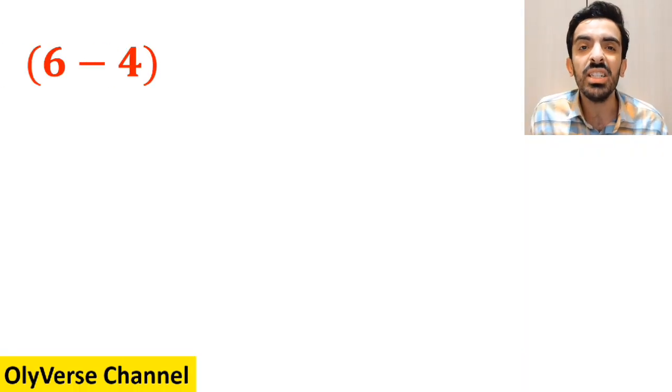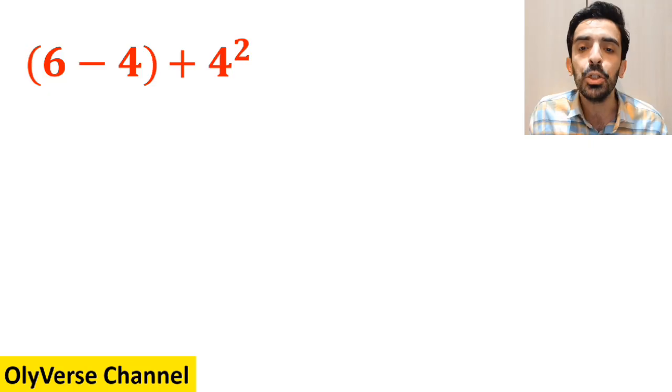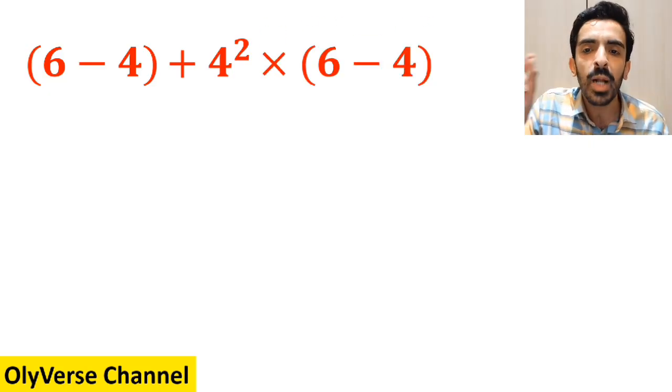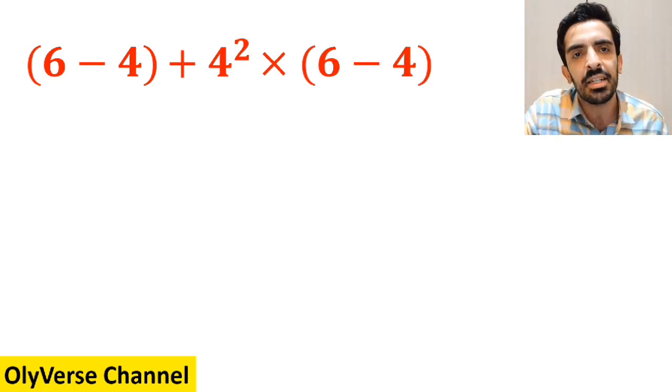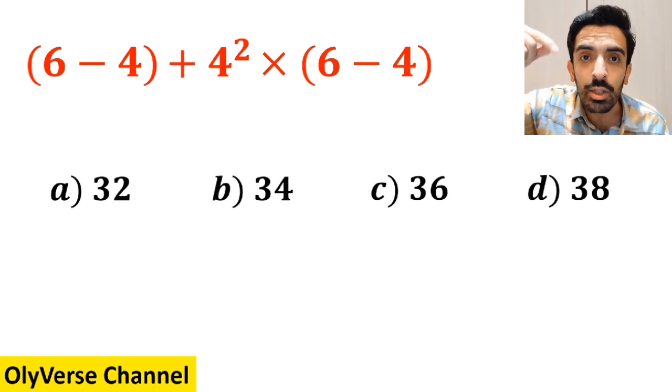What is the value of the expression 6 minus 4 inside the parenthesis, then plus 4 to the power of 2, and multiply by again 6 minus 4 inside the parenthesis? Which option do you think is the correct answer to this question?